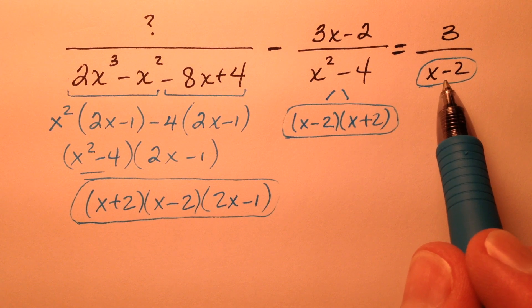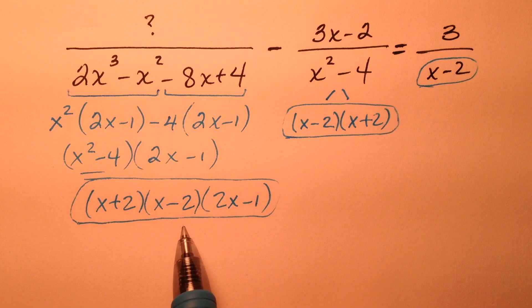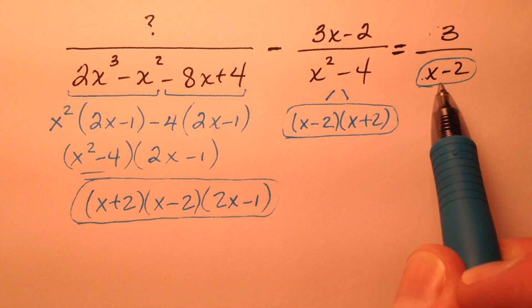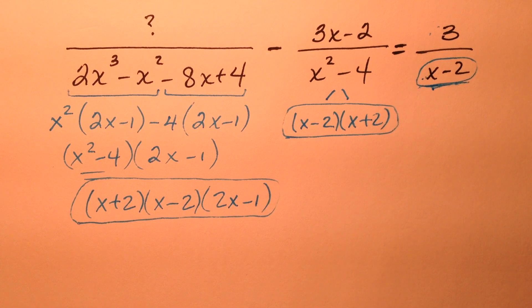So what that means is whatever this common denominator happens to come out to be, I cancel a lot of stuff from the numerator to denominator. I'm only left with x minus 2. Well, let's see what that might look like.